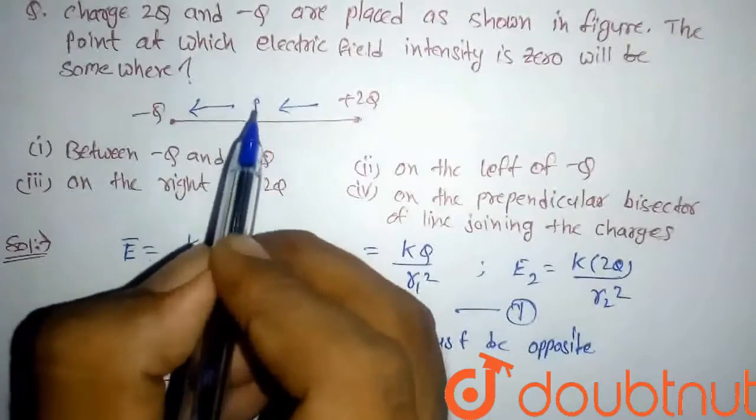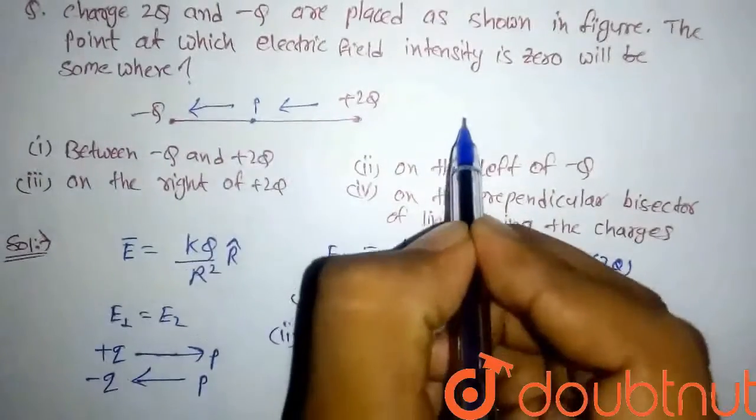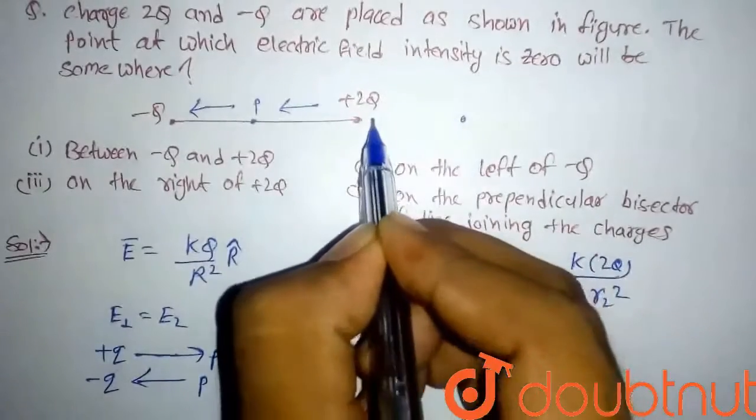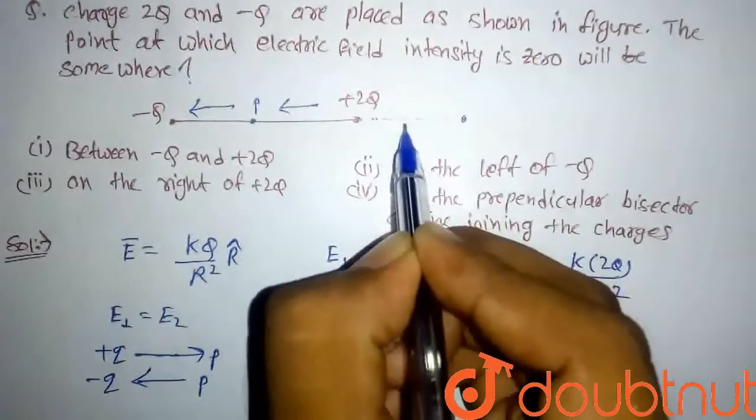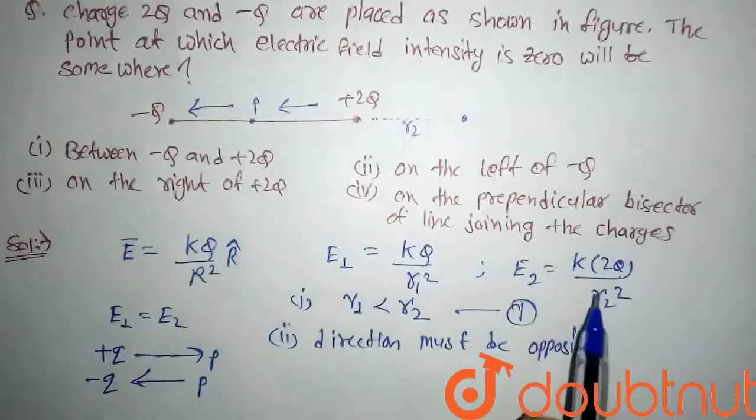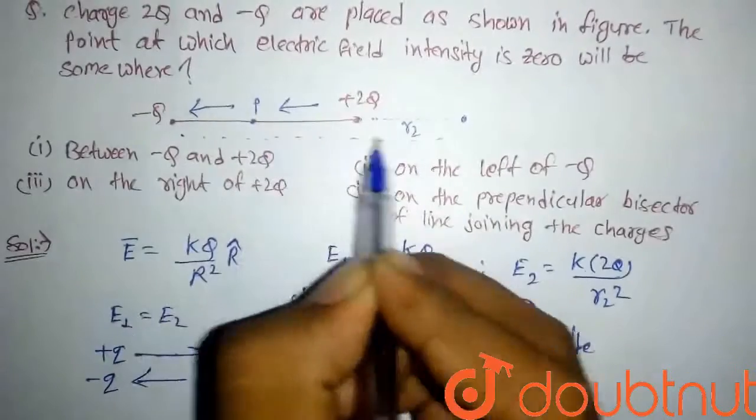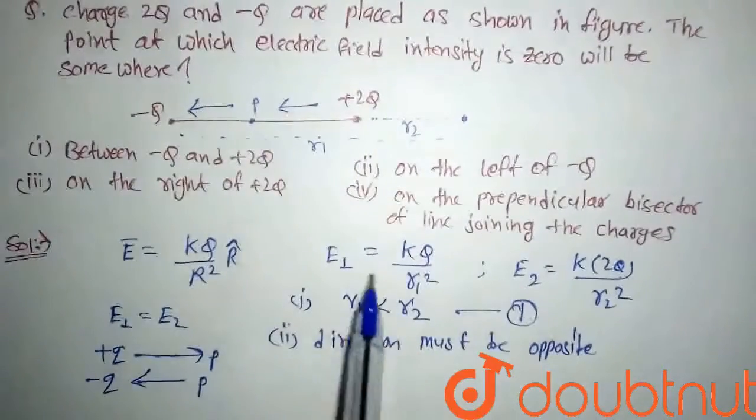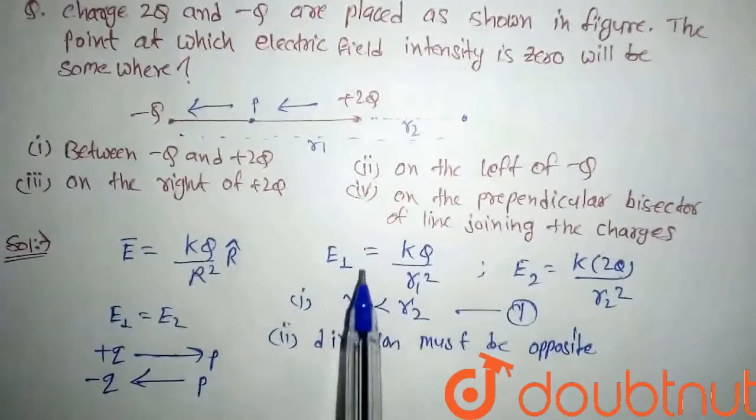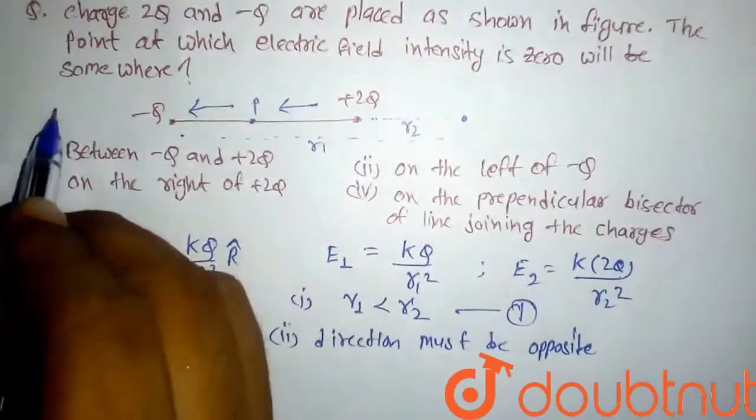If we take any point here on the right, this will be r₂ and this distance will be r₁. This condition is not satisfying because here r₁ is greater than r₂.